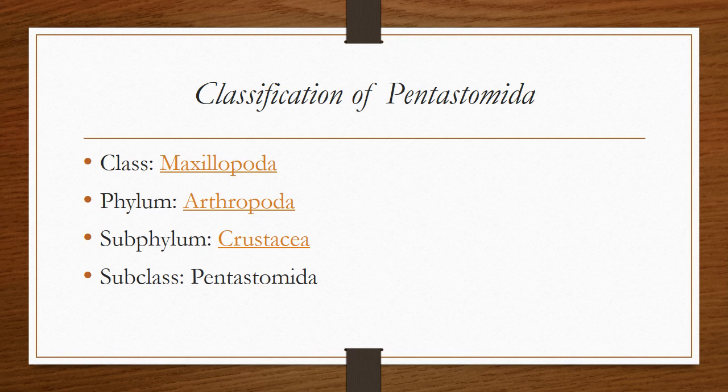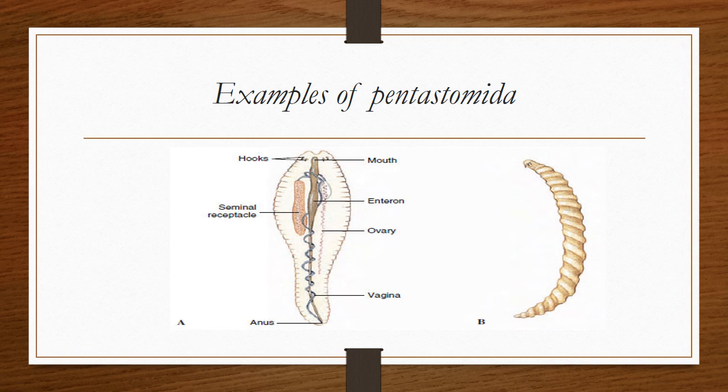Now, the classification of Pentastomida: Class Maxillopoda, Phylum Arthropoda, Subphylum Crustacea, and Subclass Pentastomida.